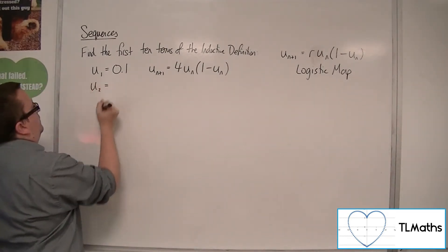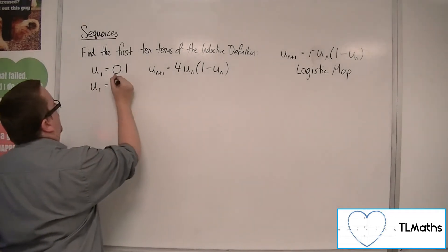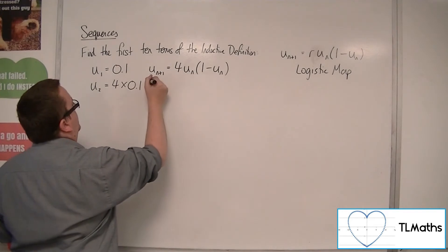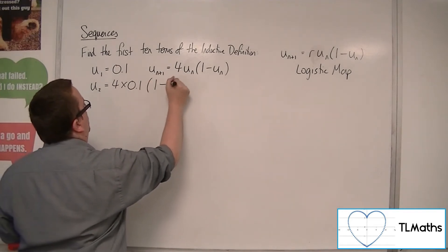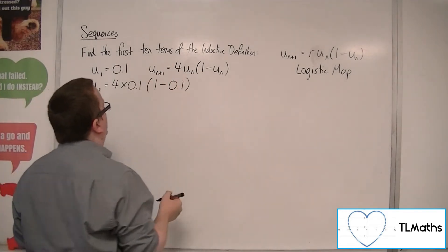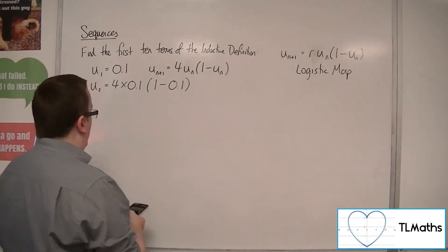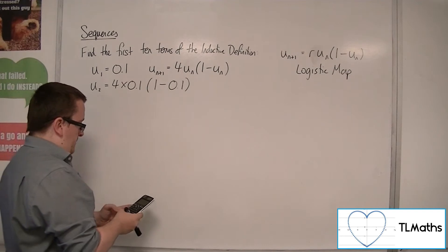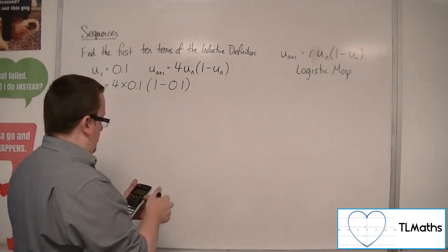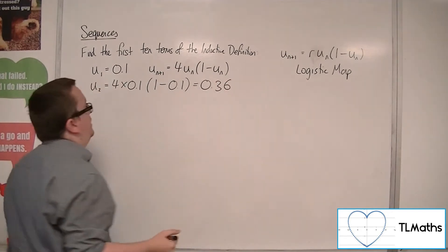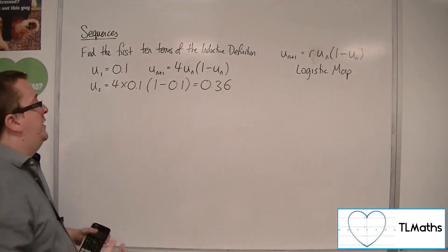So U2 is 4 lots of 0.1, the previous term, times by 1 take away the previous term. So 4 times 0.1, times by 0.9, which gets us 0.36. So 0.36 is the second term in the sequence.